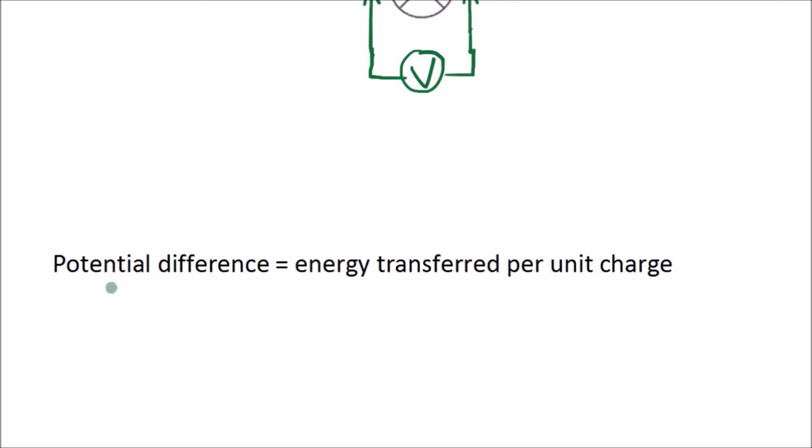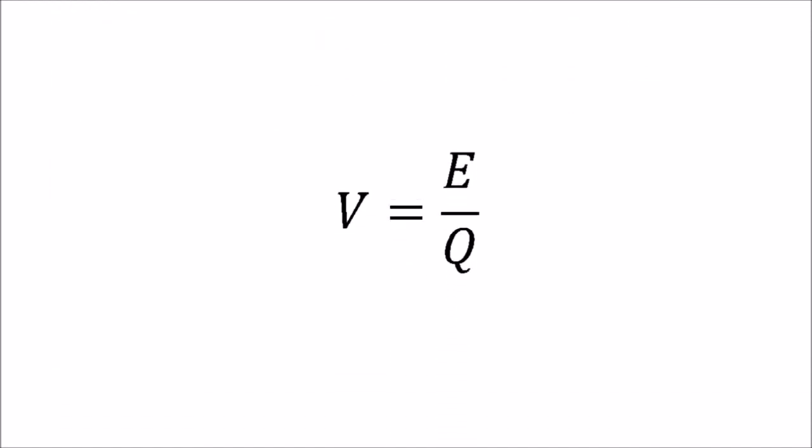So potential difference is the energy transferred per unit charge. And in equation form we can write it like this. Now this is the potential difference. It's measured in volts, and the symbol for the unit is capital V. This is the energy transferred, measured in joules, capital J. And then we have charge, and as usual it's measured in coulombs, capital C.